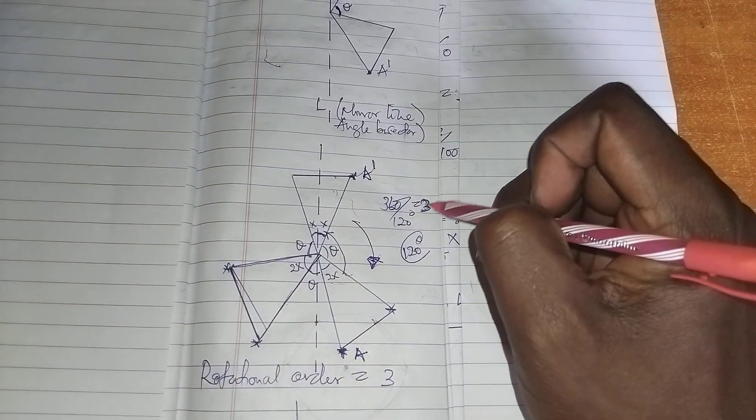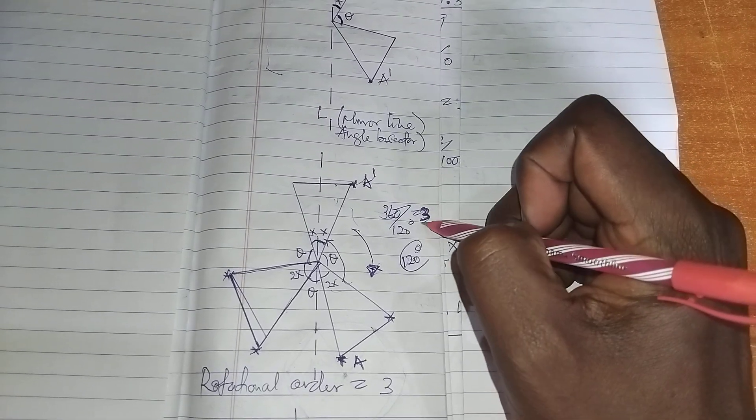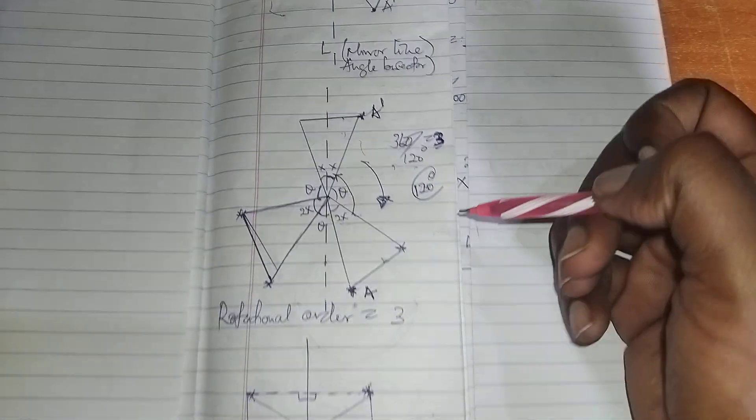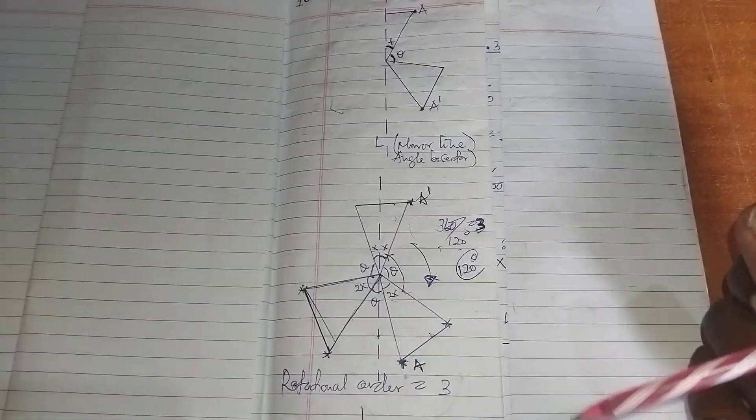You'll come to realize that it has a rotational order of 3. You have 360 divided by 120, so the rotational order is 3.